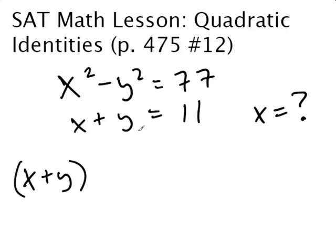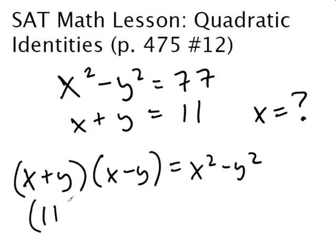x plus y times x minus y equals x squared minus y squared. So all of a sudden you can do some nice substituting here. You know that x plus y equals 11, so 11 times x minus y. And then you can substitute for x squared minus y squared as well. So now all of a sudden, 11 times something equals 77, so x minus y equals 7.